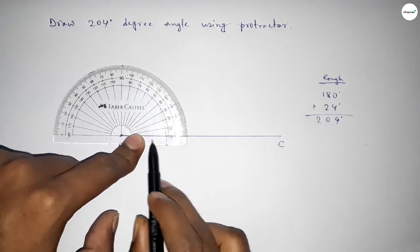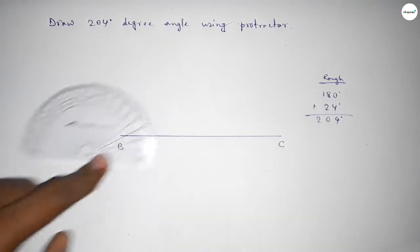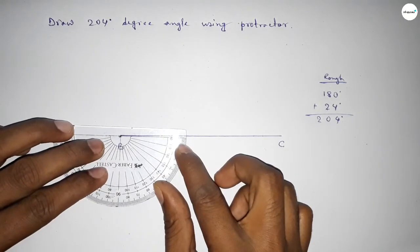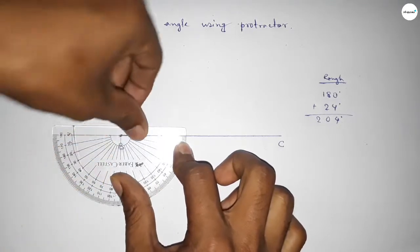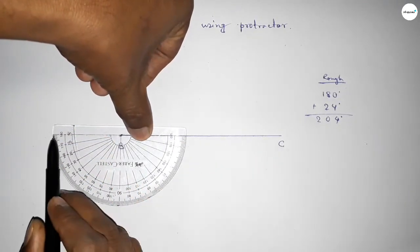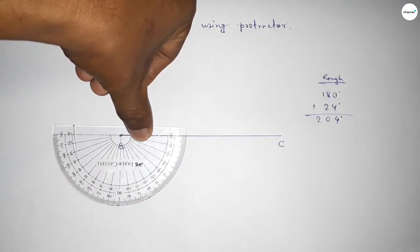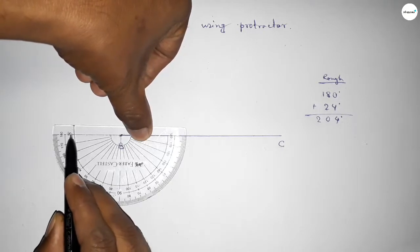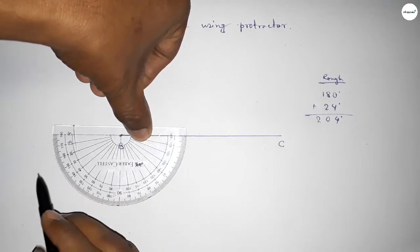Plus, putting the protractor on point B by this way and counting angle 24 degree. So this is 180 degree angle. Again, this is starting angle 0, 10, 20, 21, 22, 23, so this is 23.